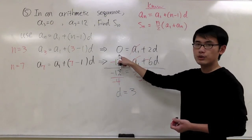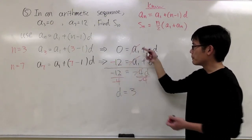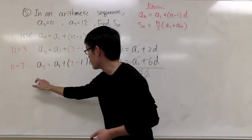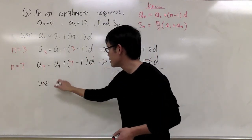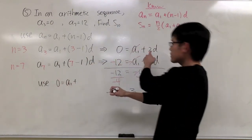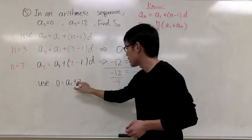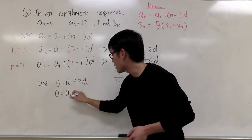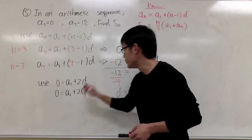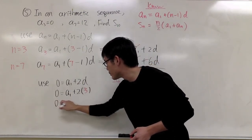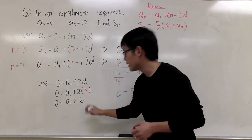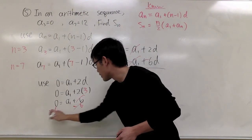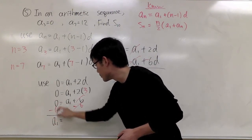I can plug d = 3 into one of our equations. Using 0 = a1 + 2d, we get 0 = a1 + 2 times 3, which is 0 = a1 + 6. Subtracting 6 from both sides gives a1 = negative 6.